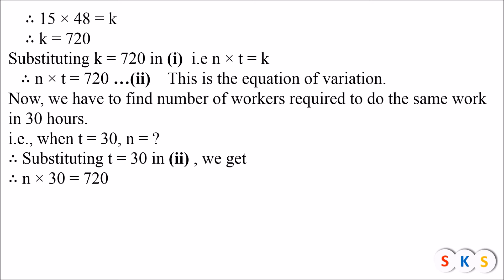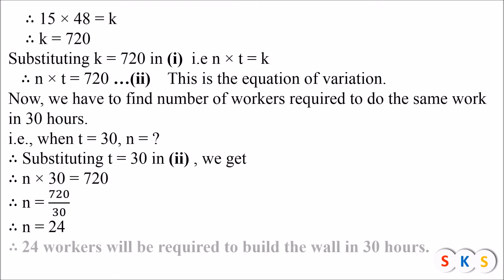Shifting 30 to the other side: n = 720 ÷ 30, so n = 24. It means 24 workers are required to build the wall in 30 hours.